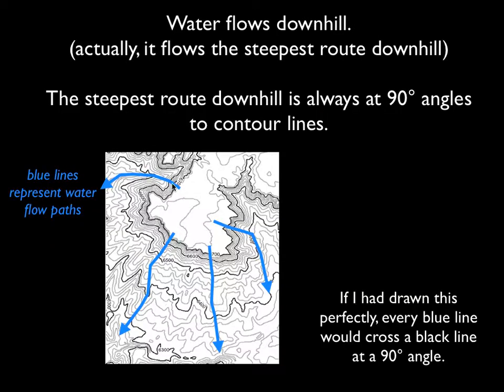When you do that, you see it goes from high levels like 6,700 feet down to 6,300 feet. In particular, water doesn't just flow downslope—it actually flows on the steepest route downhill.